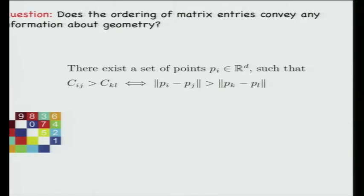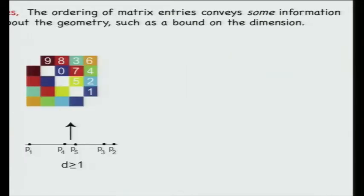This raises a natural question: does the ordering of matrix entries convey any information about geometry? Specifically, does there exist a set of points in Euclidean space such that cij > ckl if and only if the corresponding distances satisfy the same order? Even though preserving only ordering washes out a large swath of information, some is already preserved—for example, a bound on dimension.